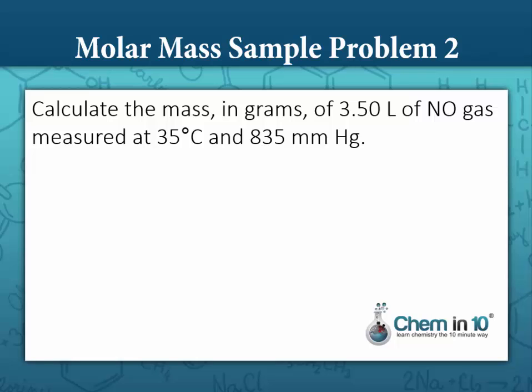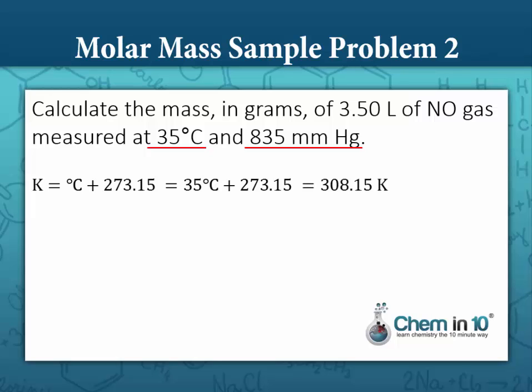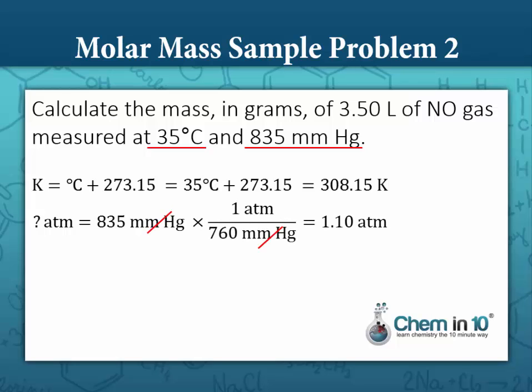Let's look at another sample problem. Calculate the mass in grams of 3.50 liters of nitrogen monoxide gas measured at 35 degrees Celsius and 835 millimeters mercury. We have the identity of the gas so we can find its molar mass and figure out the mass we have. Converting: 35°C plus 273.15 equals 308.15 Kelvin, and 835 mmHg divided by 760 equals 1.10 atmospheres.